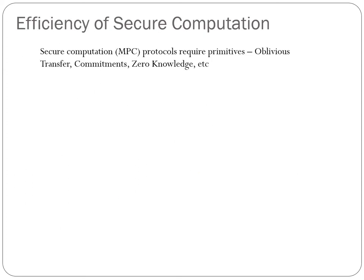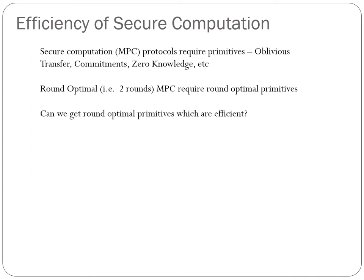Secure computation protocols require MPC primitives like oblivious transfer, commitment scheme, zero knowledge, and many more. So a main step towards building efficient MPC protocols involves building efficient MPC primitives. Also, the primitives need to be round optimal so that the underlying MPC protocol is round optimal. But it is really hard to obtain both round optimality and efficiency. This brings us to the question: can we obtain efficient round optimal primitives?